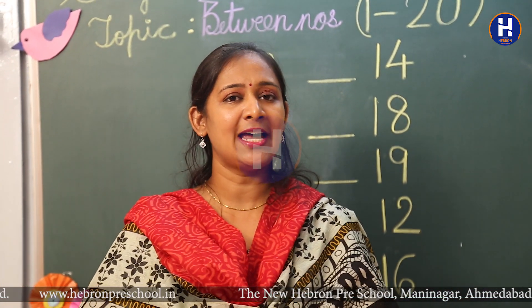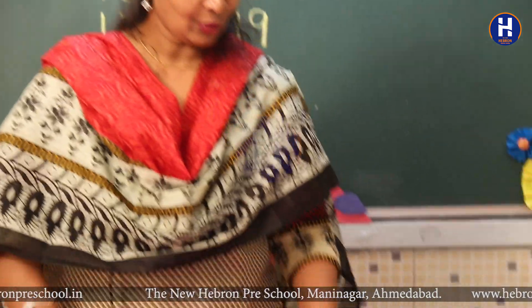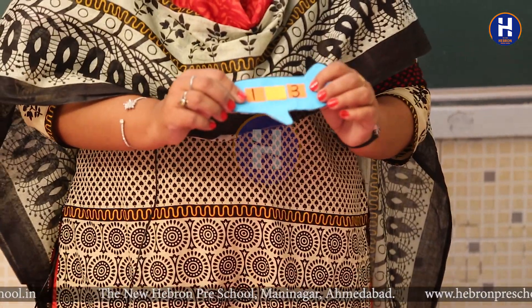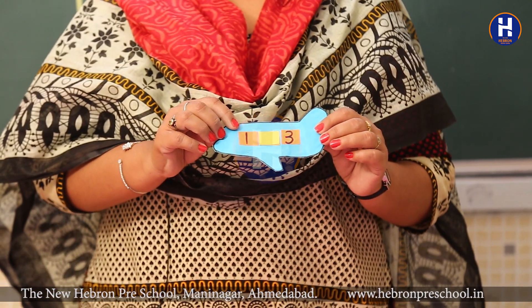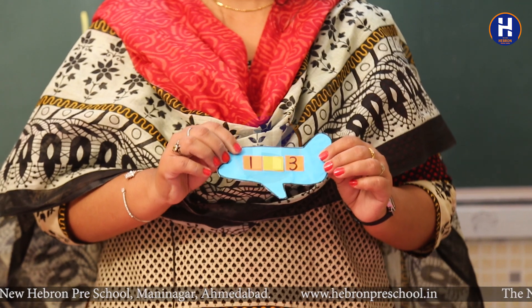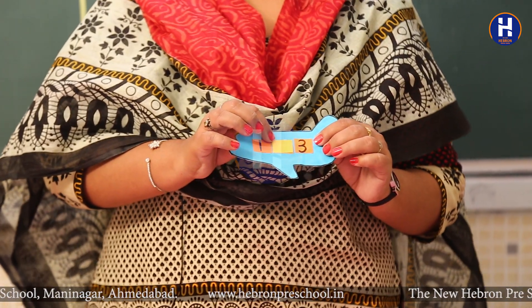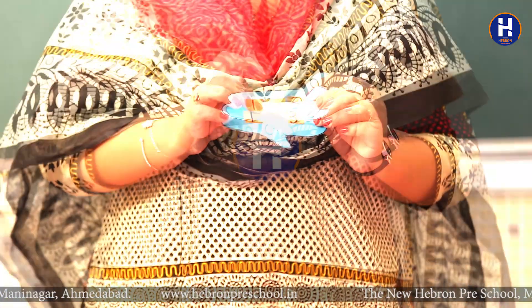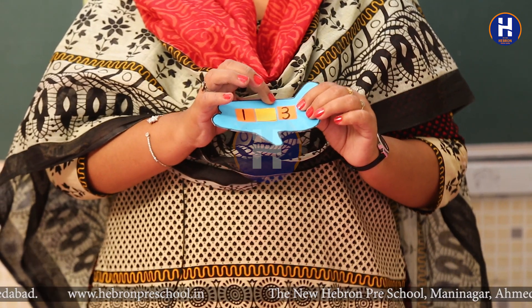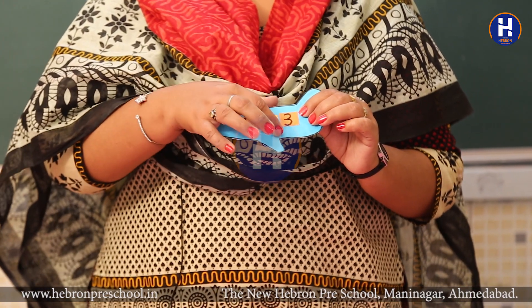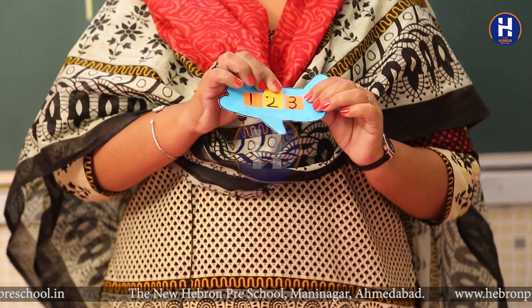Let's start with an activity which I have planned for you and you are going to enjoy it. I have made these aeroplane flashcards for you. Here, I have made three windows — two windows are orange color in which I have written the before and after numbers, and the yellow window has a hidden number in it. You have to tell me what comes between 1 and 3. Let's count: one, two. This hidden number is two. So, two is the between number.